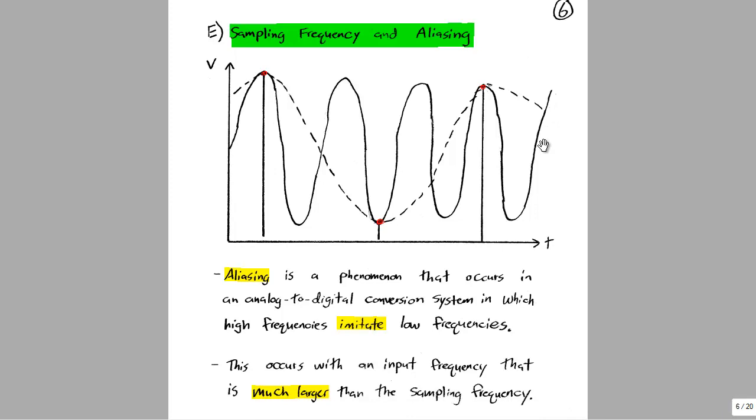In part B of the lab you'll run into a phenomenon called aliasing. You might remember this from signal processing classes. This is a phenomenon where high frequencies can imitate low frequencies, depending on the sampling frequency you choose. This happens if your input frequency is much greater than your sampling frequency.